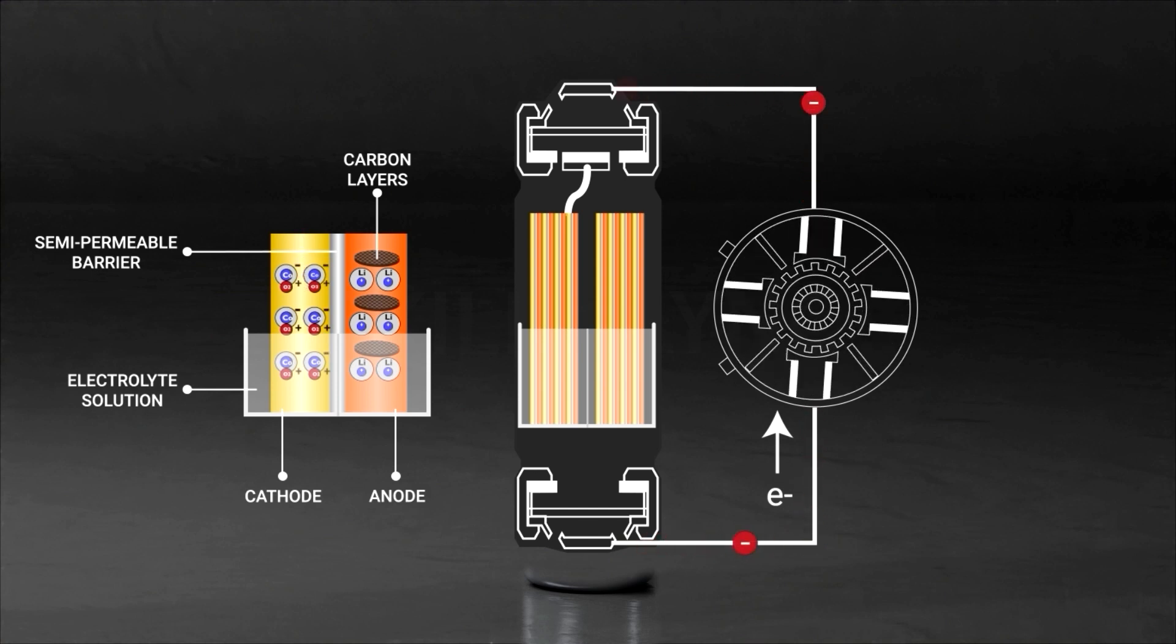As more electrons accumulate, they begin to resist the flow of electrons from the anode. This prevents the flow of electricity. At the anode, the positively charged lithium ions get knocked out of the carbon layers and flow across the electrolyte to the cathode.